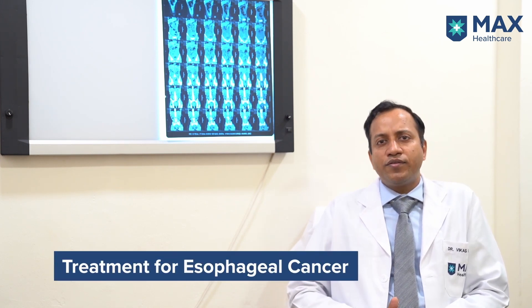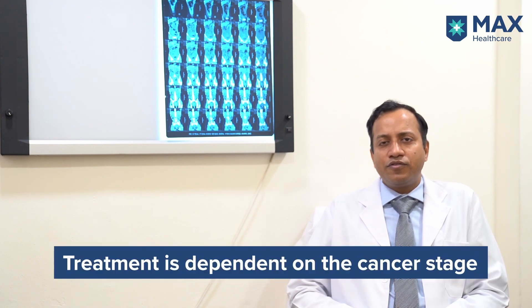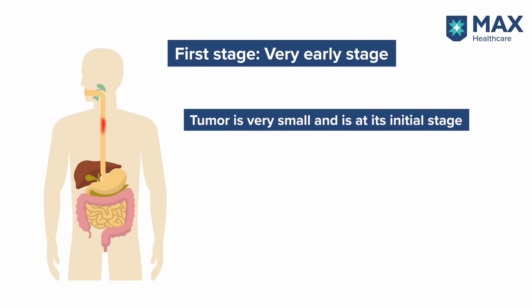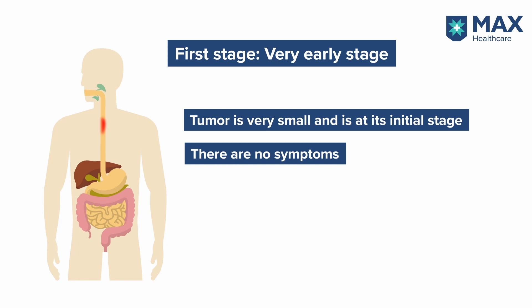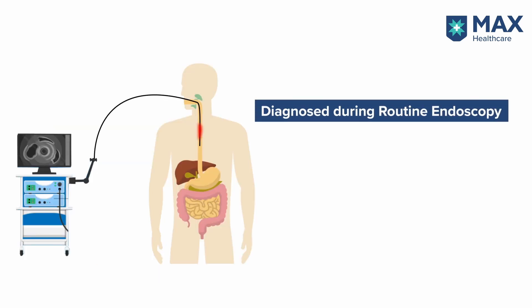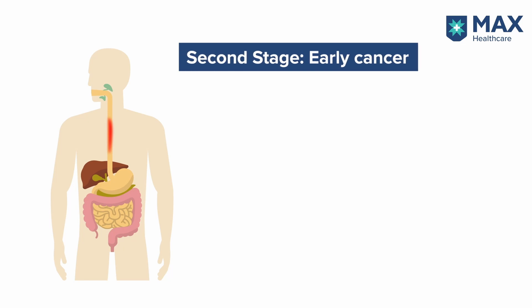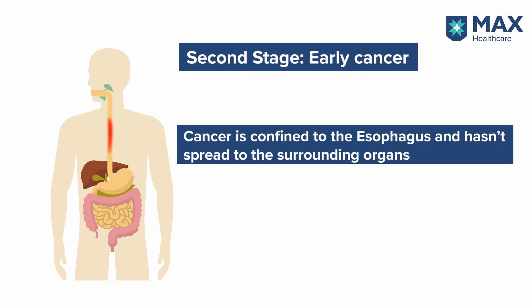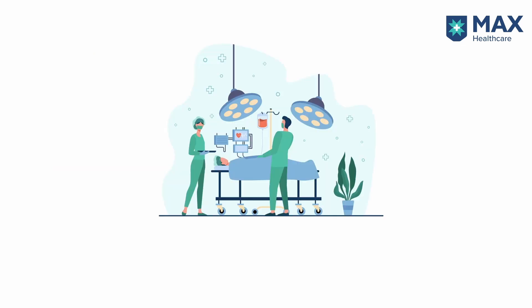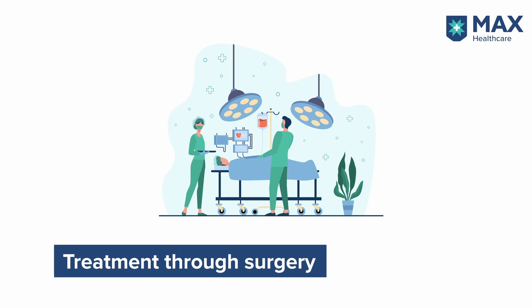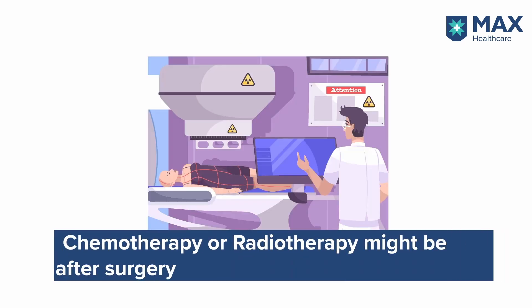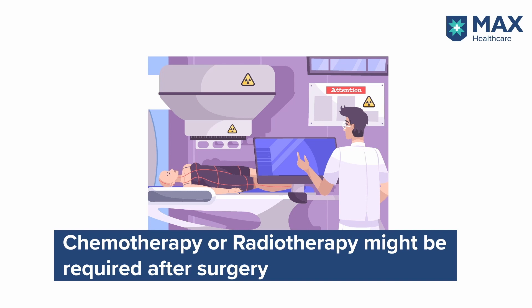Let's see how esophageal cancer is treated. Treatment depends on the stage. The first stage is a very early stage where the tumour is in its initial stage and the patient has no symptoms — this can be diagnosed during routine endoscopy. New age image-enhanced endoscopy can diagnose early stage cancer even without a biopsy. In the next stage, early cancer, the cancer is confined to the esophagus only and has not spread to surrounding organs. Such patients can be directly operated on with surgery and cured. After surgery, some patients may also need chemotherapy or radiotherapy.